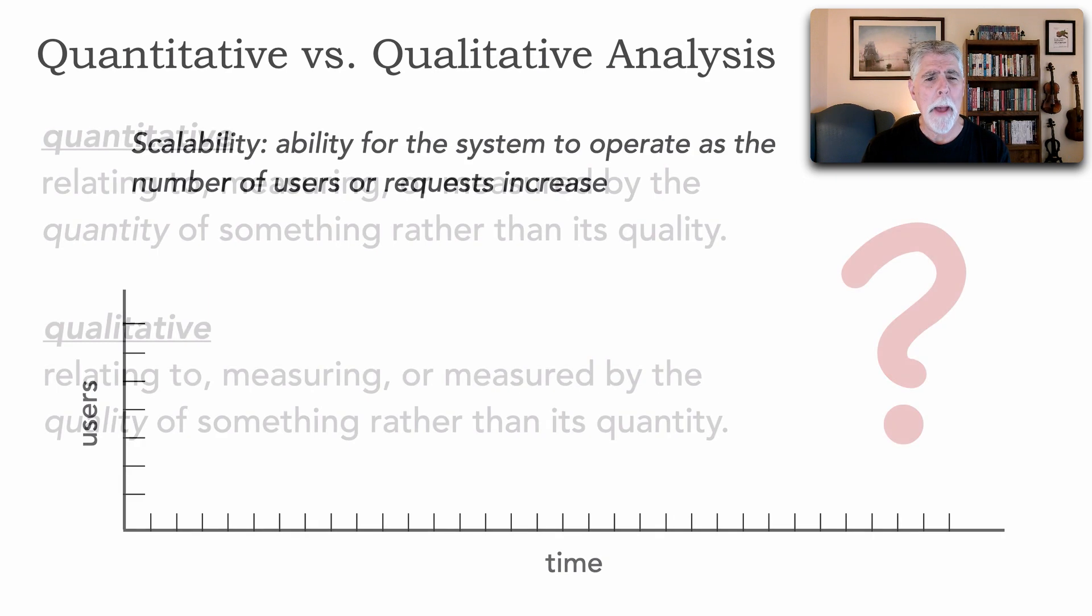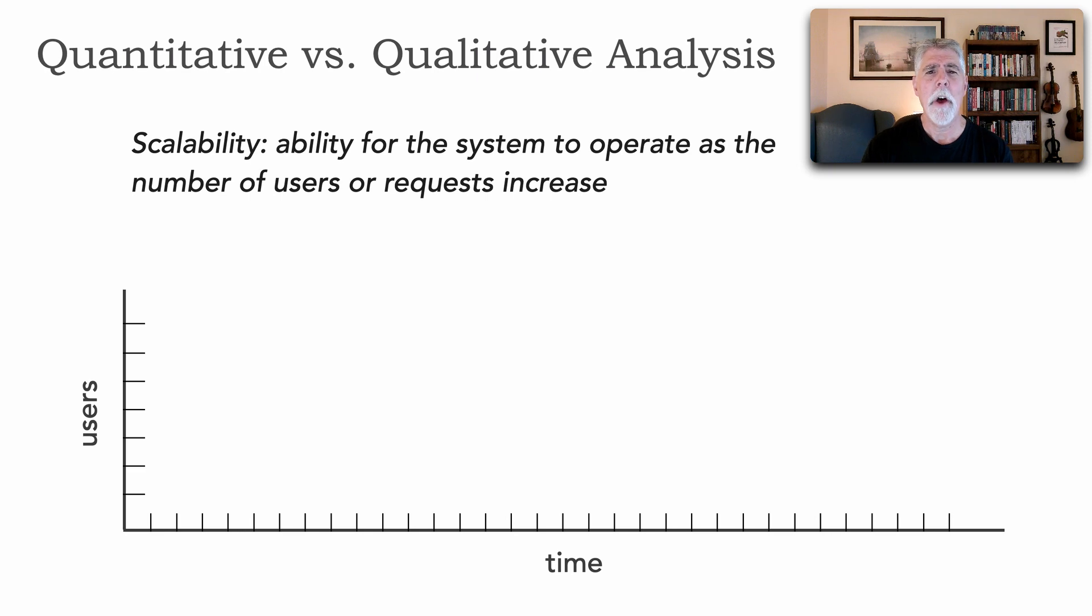What I want to do is go back to lesson 71 where we talked about defining scalability. Now scalability is the ability for the system to operate as the number of users or requests in the system start to increase over time. But what does it mean for the system to operate? Well, these are things we can actually measure, and this is where quantitative analysis and qualitative analysis both come in.